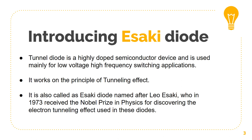The electric current through the diode is caused by quantum tunneling. The current across the tunnel diode decreases as the voltage increases. As an effect, the tunnel diode exhibits a negative resistance. It is also called an Esaki diode, named after Leo Esaki, who in 1973 received the Nobel Prize in physics for discovering the electron tunneling effect used in these diodes.